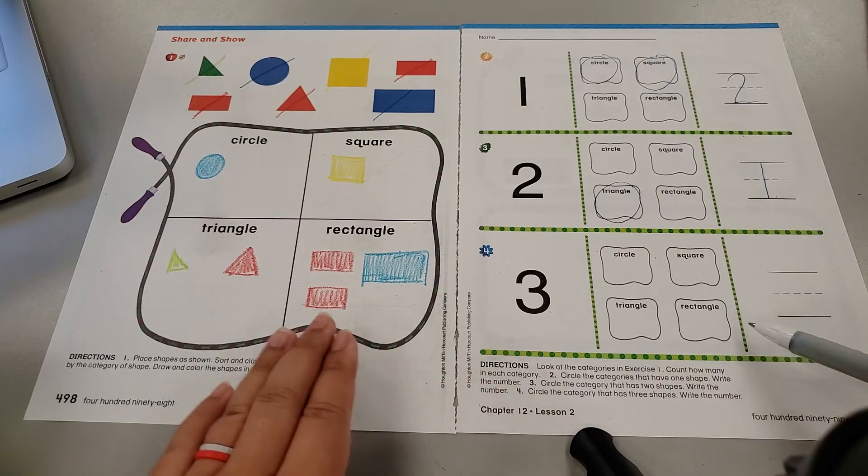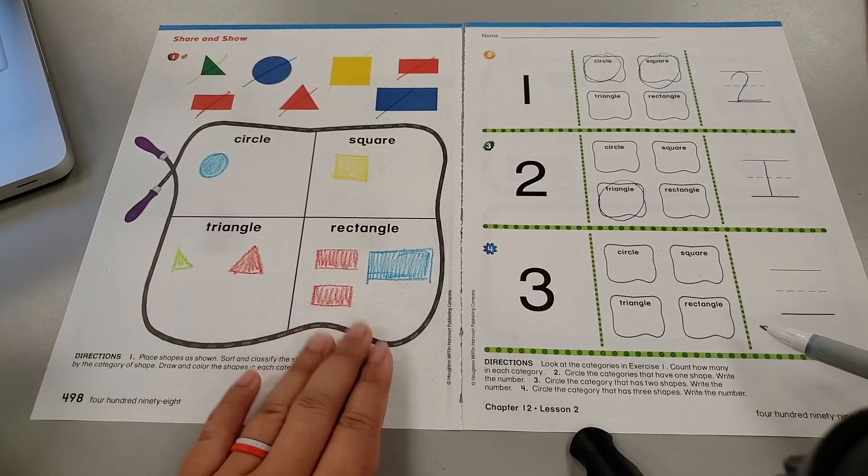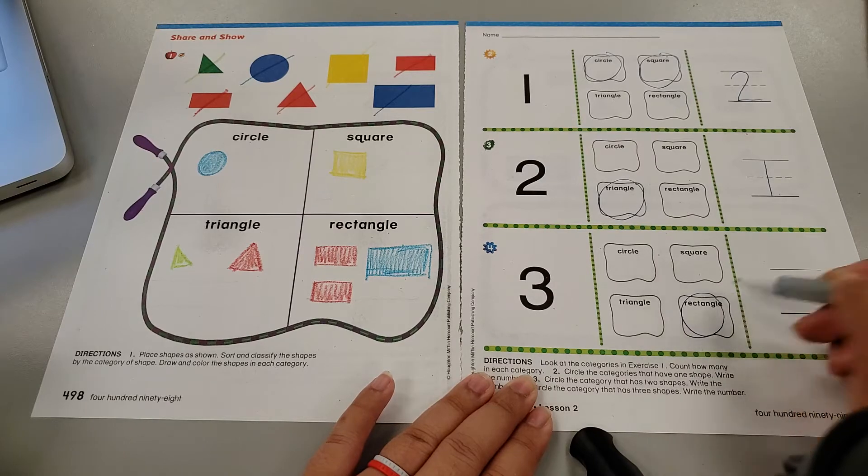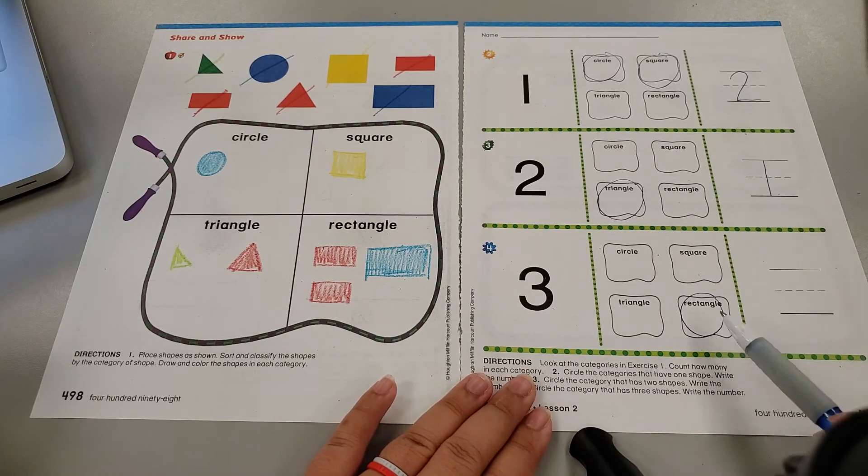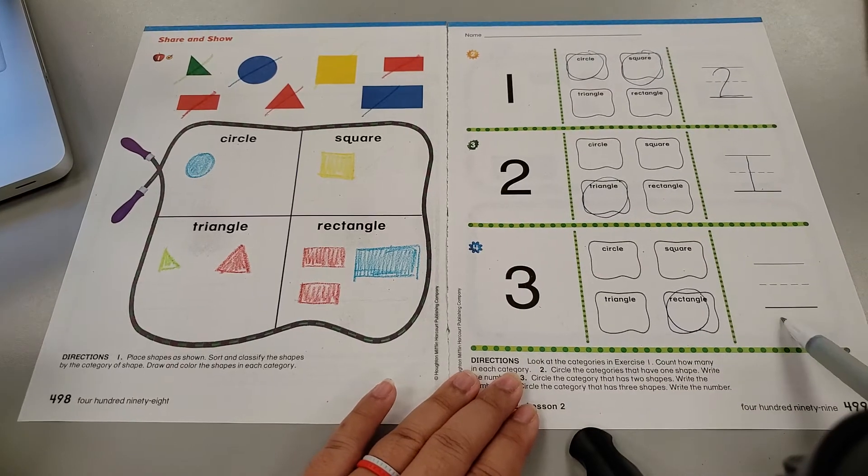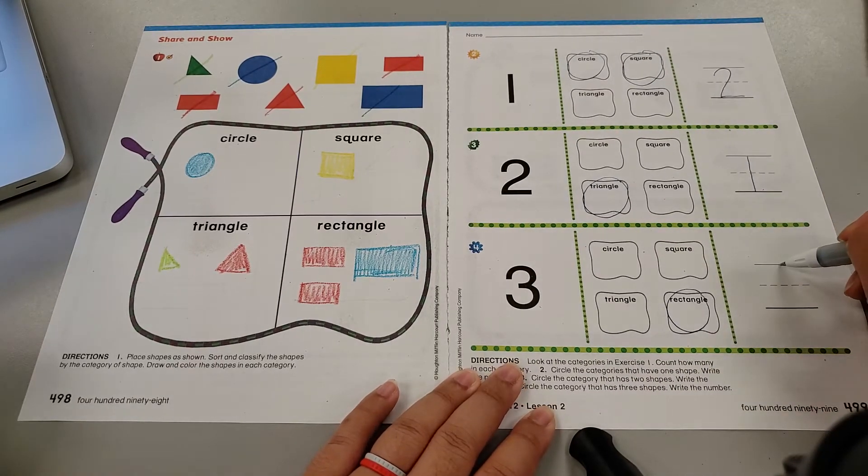Next up. Which categories have three shapes? Oh my eyes. That's really easy. A rectangle. Rectangle category is the only one that had three shapes. So how many categories did we circle for three? Just one.